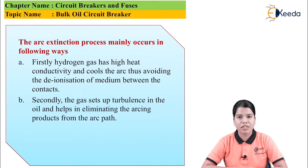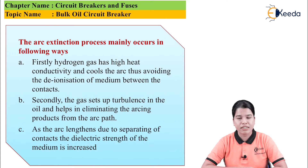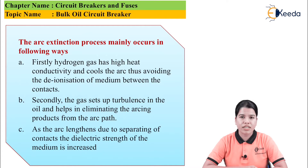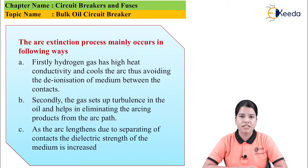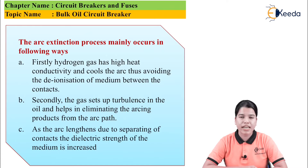Secondly, the gas sets up turbulence in the oil, due to which any byproducts of the arc are eliminated. The arc length increases as the contacts of the circuit breaker are separated, and this increases the dielectric strength of the oil. As the dielectric strength of the oil becomes greater than the restriking voltage, the arc is eliminated at the current zero position.